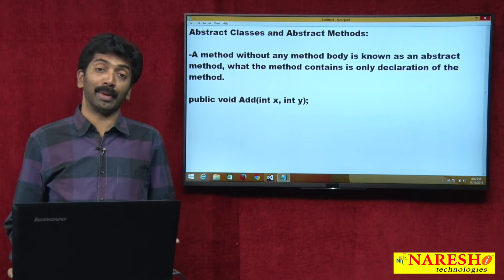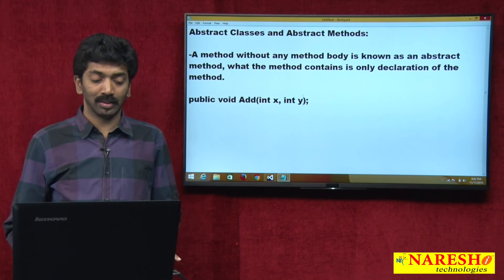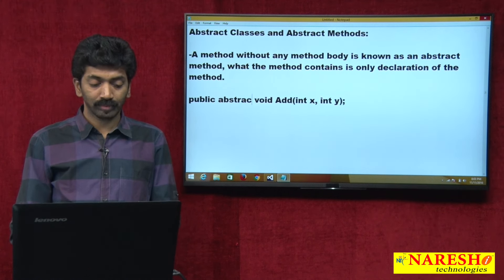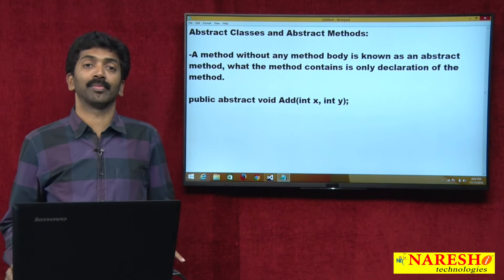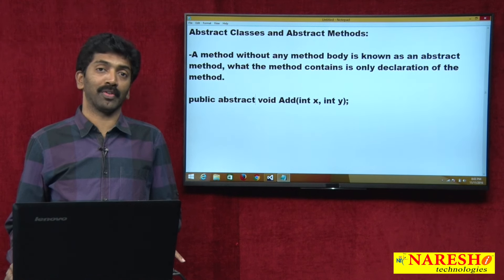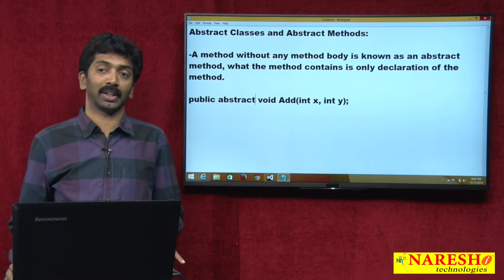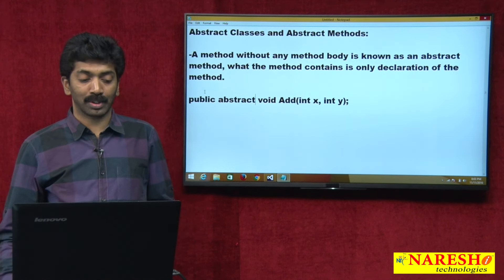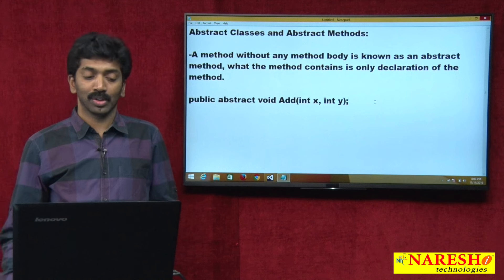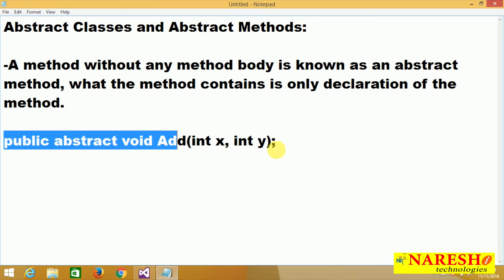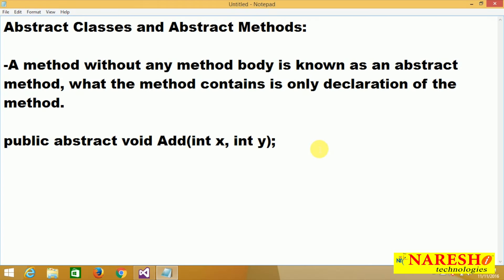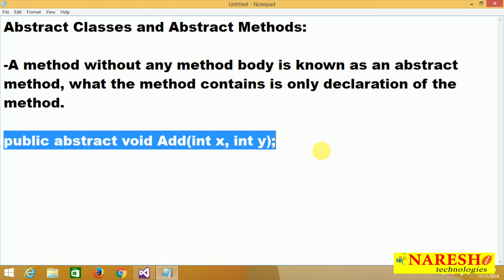Remember, if you want to define a method as abstract, you should explicitly use the abstract modifier. We should explicitly use the abstract modifier. If you use the abstract modifier, that method is now going to be called an abstract method. So this is what an abstract method is: 'public abstract void add'. This is an abstract method.